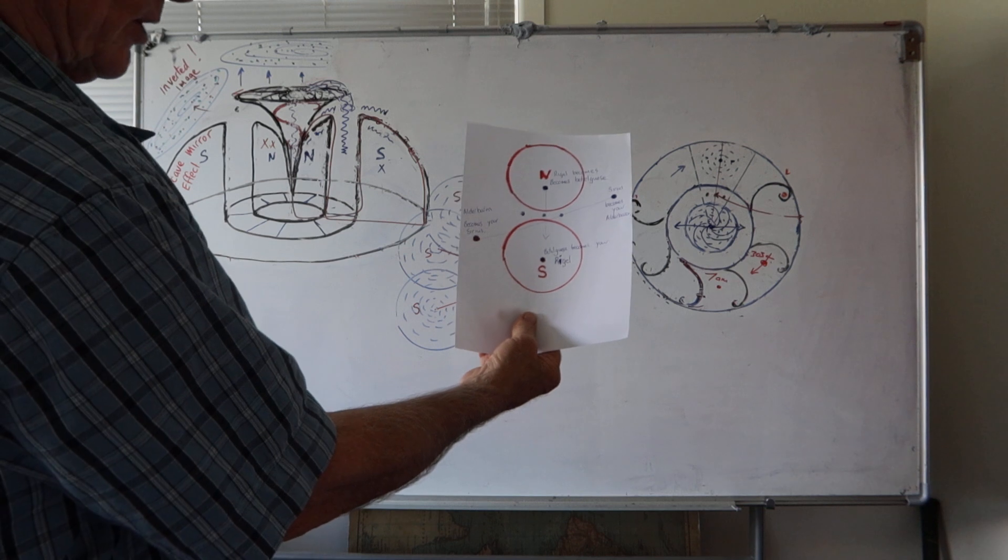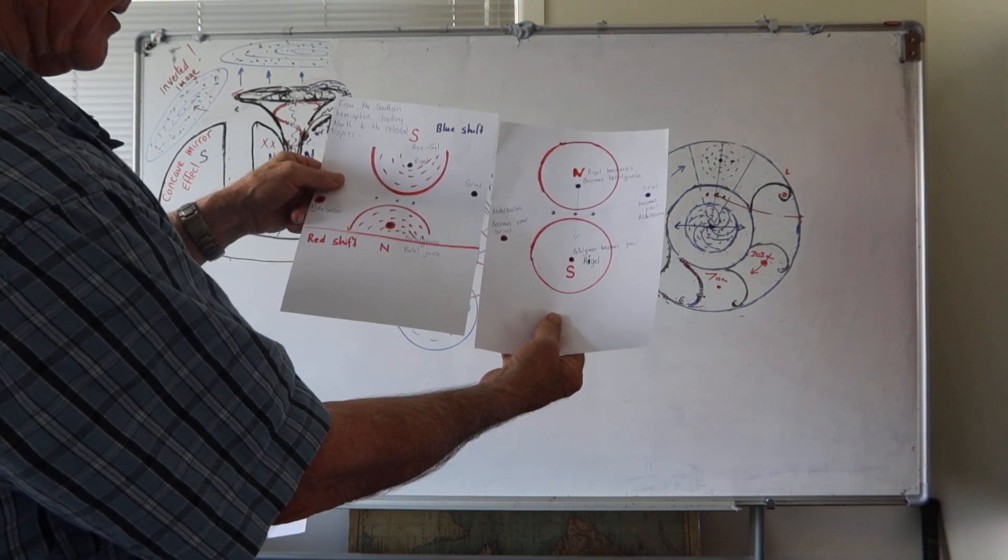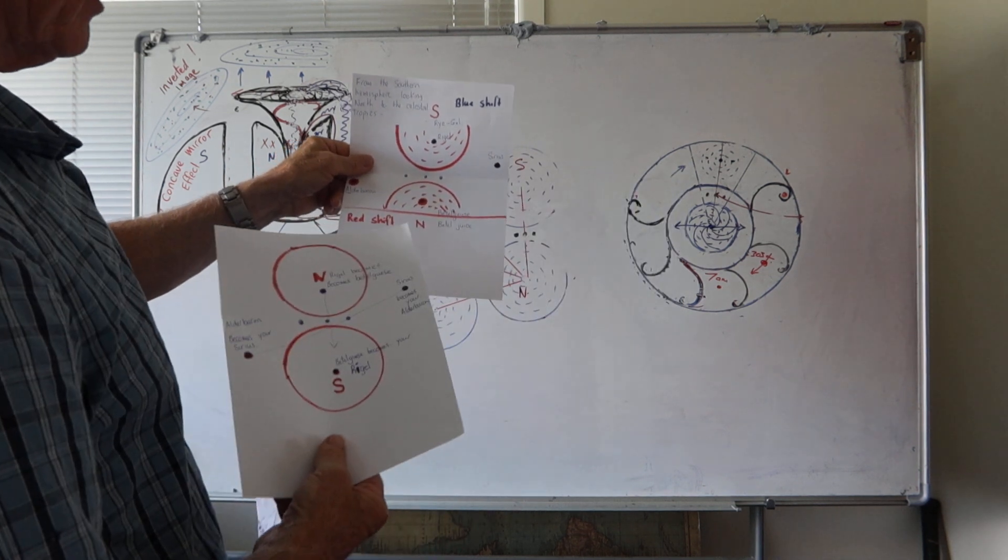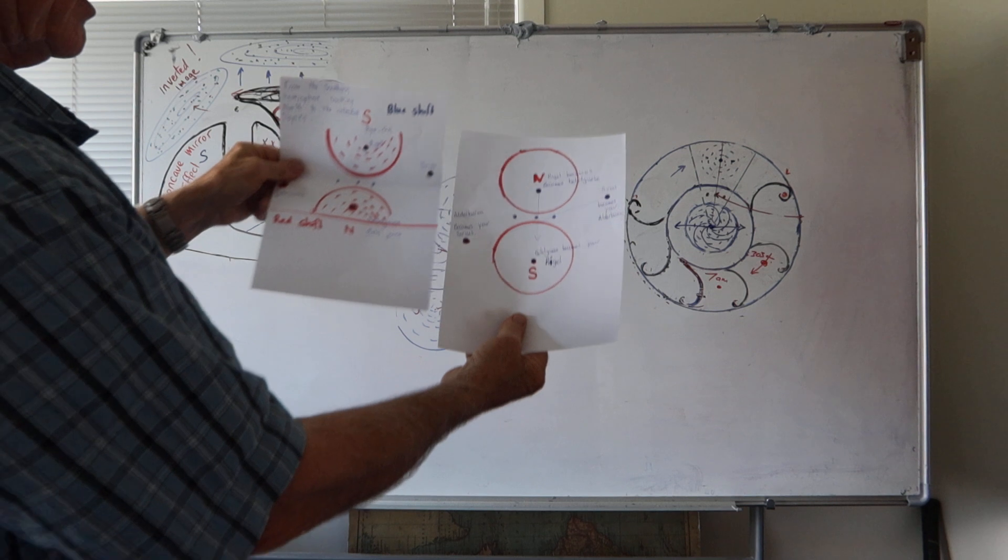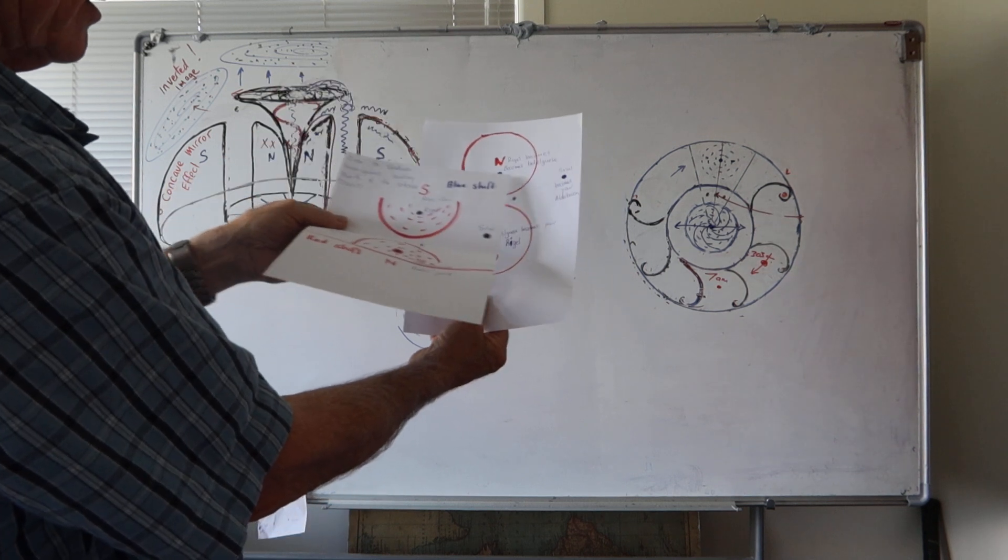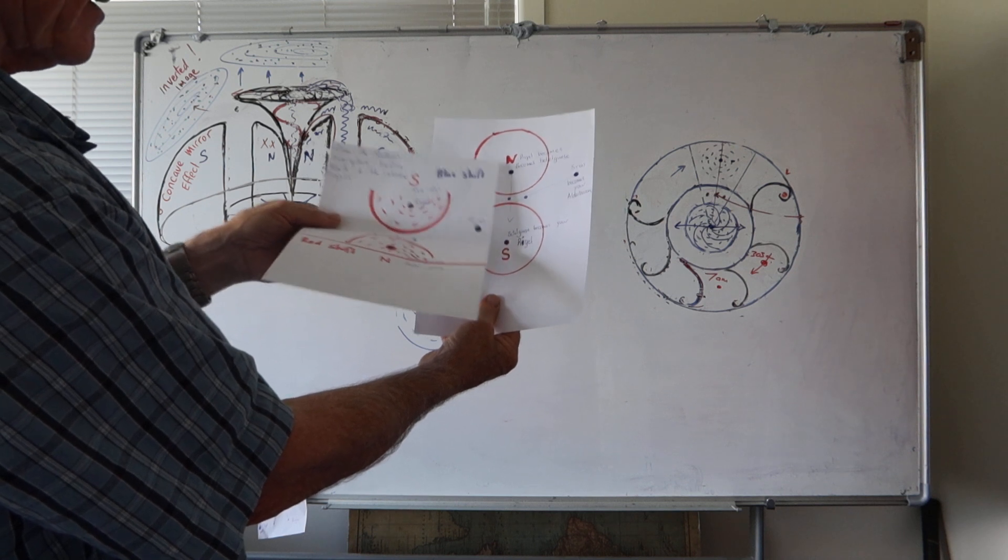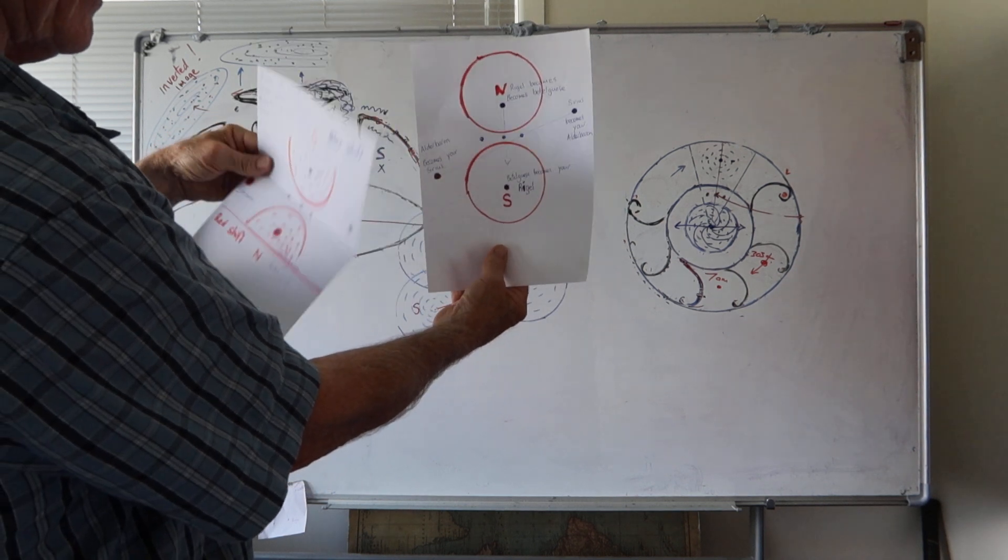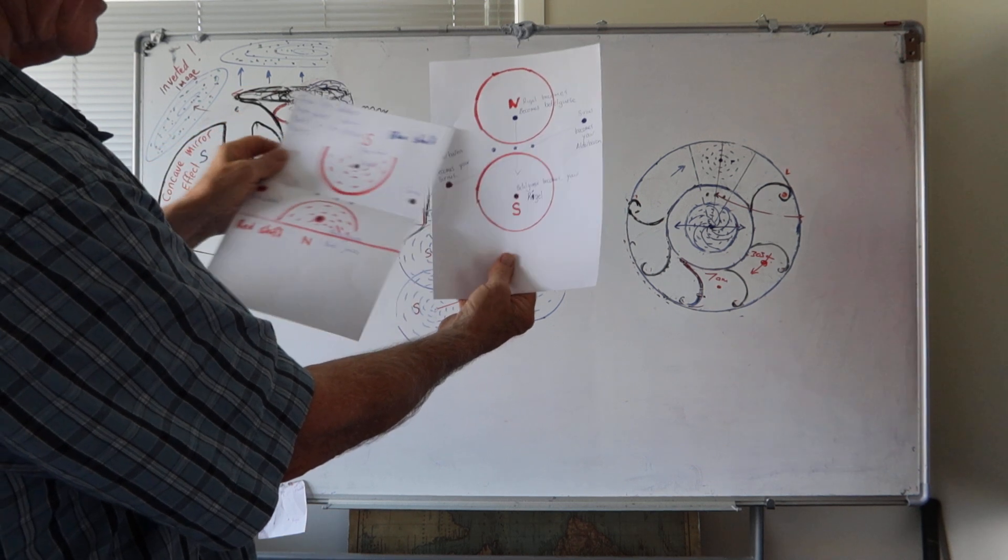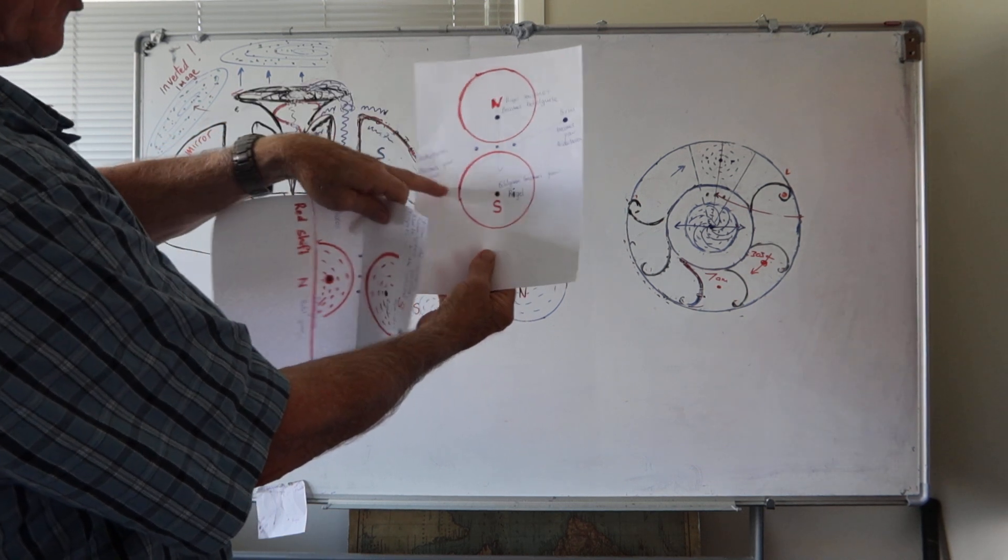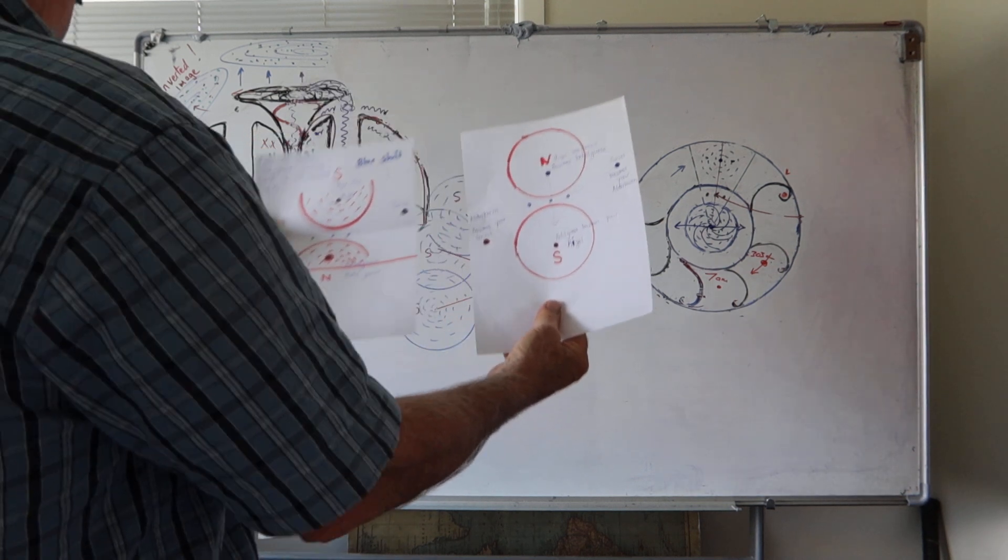Concentrate on this, get a good look at that. There's the two images. From the south, Sirius and Rigel in the north, you've got Aldebaran and Betelgeuse, blue shifted. In the south, red shifted. Very logical, easy to explain.